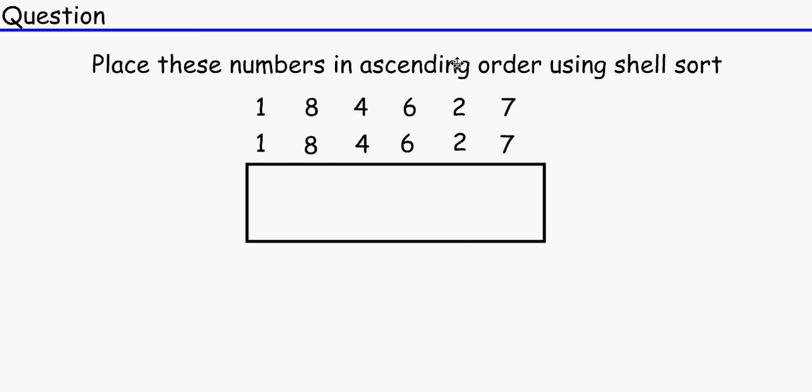So what you do is you count how many numbers there are in that list. So there's one, two, three, four, five, six numbers in that list. And then you want to break that down into sublists. So what you do, you divide six, because that's how many numbers there are, by two. We usually have an int there.